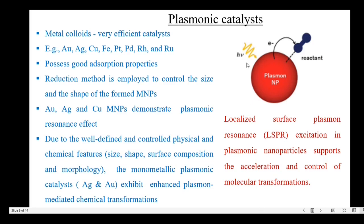The first type is the metallic nanoparticle catalyst, that is the plasmonic catalyst. Metal colloids are very efficient catalysts — examples include gold, silver, copper, ferrous, platinum and so on. Metal nanoparticles possess good adsorption properties and are generally prepared by reduction method, which is employed to control the size and shape of the metal nanoparticles. Noble metal nanoparticles like gold, silver and copper demonstrate plasmonic resonance effect — that is, collective electron oscillations which resonate at the frequency of incident light.